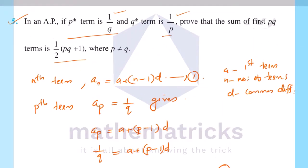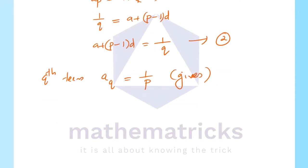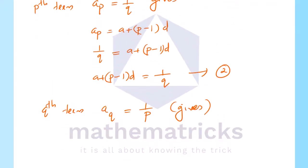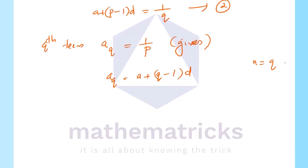Now, we are told that the qth term is 1/p. That is, a_q is equal to 1/p. So a_q equals a plus (q minus 1) into d, and this equals 1/p.